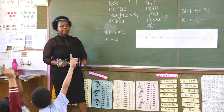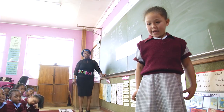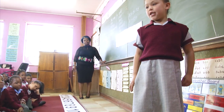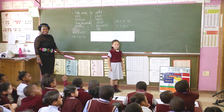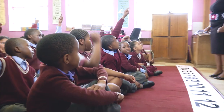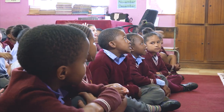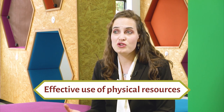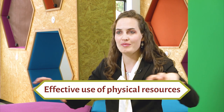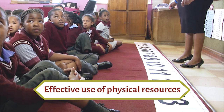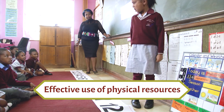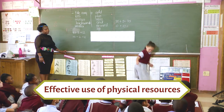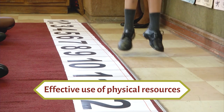15 minus 4. I am standing on 15 and I jump 4 numbers backwards: 1, 2, 3, 4. What is our answer? — 11. — Miss Beloyed had wonderful physical resources, including a huge number line stretched along the carpet. She got her learners physically involved by asking them to jump forwards and backwards to carry out their addition and subtraction problems.